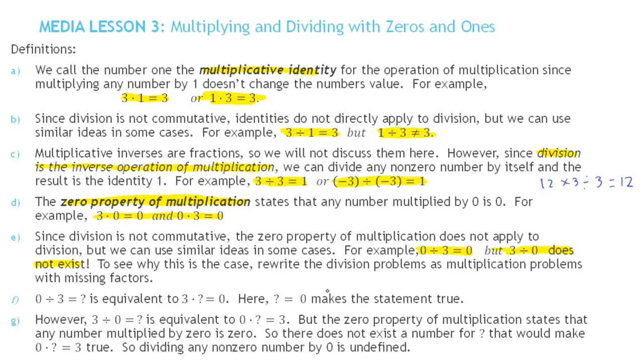But if we look at it in reverse order, 3 divided by 0, this is saying 0 times what number equals 3. We know from the zero property of multiplication, 0 times any number is 0. That's why we say dividing by 0 is undefined, or we say the number does not exist.